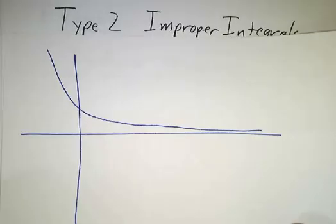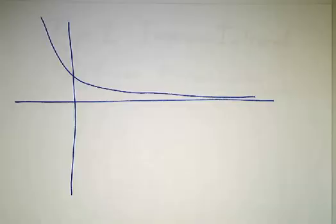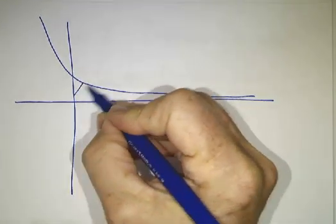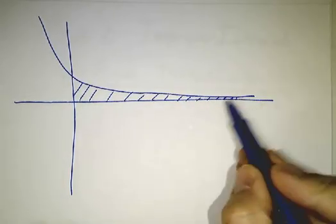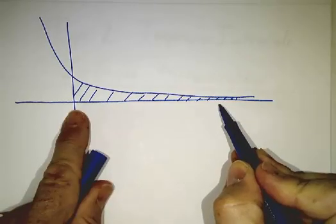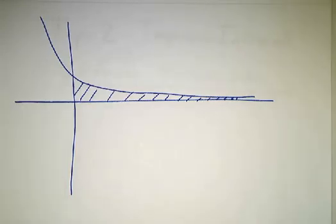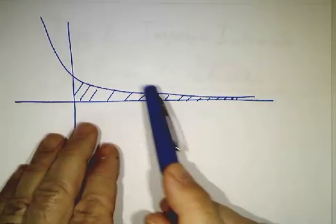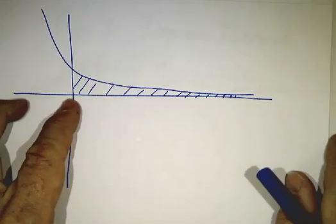So type 1 improper integral looks kind of like this. We're interested in what is the total area of this region here. And we got that by cutting it off at a certain spot here, integrating from 0 to t and then taking a limit as t went to infinity. We saw that there were some functions like e to the minus x and 1 over x squared and 1 over x to p for any value of p bigger than 1, where this integral would converge. That even though it's infinitely wide, you only have a finite amount of area.